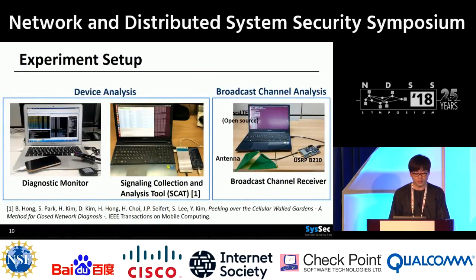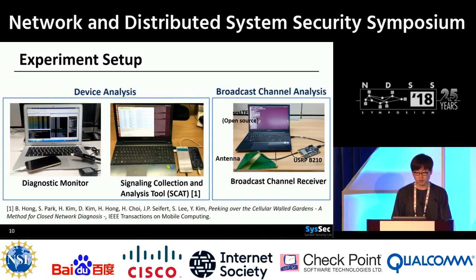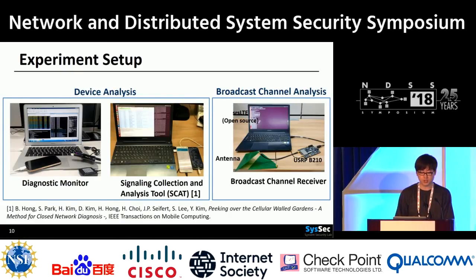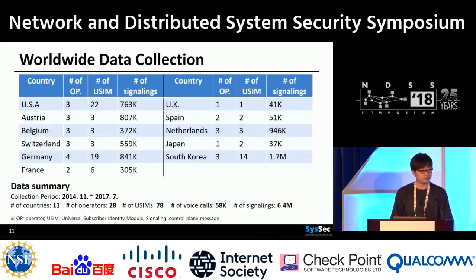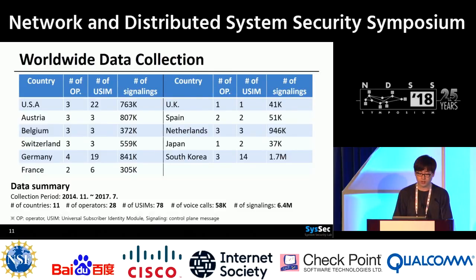First, we collected data for traffic analysis. We used a commercial diagnostic monitor and a tool called SCAT that we developed to collect and analyze the device's control plane messages. To analyze the paging messages of a broadcast channel, the open source library SRS-LTE and software-defined radio USRP B210 were used. For about three years, we collected data from 28 carriers in 11 countries using a total of 78 SIM cards. The total number of voice calls was over 50,000 and the number of signaling messages was over 6 million.